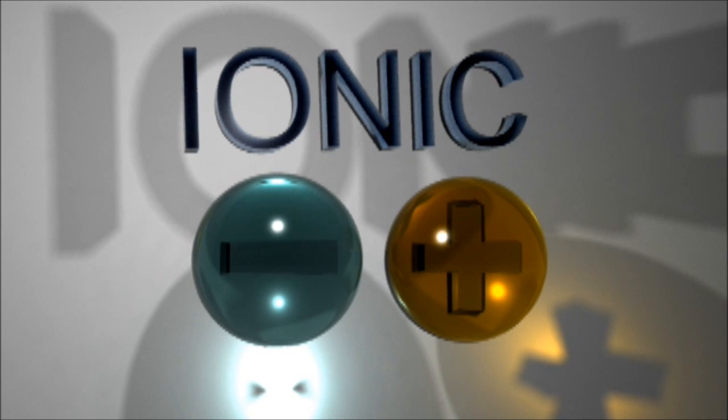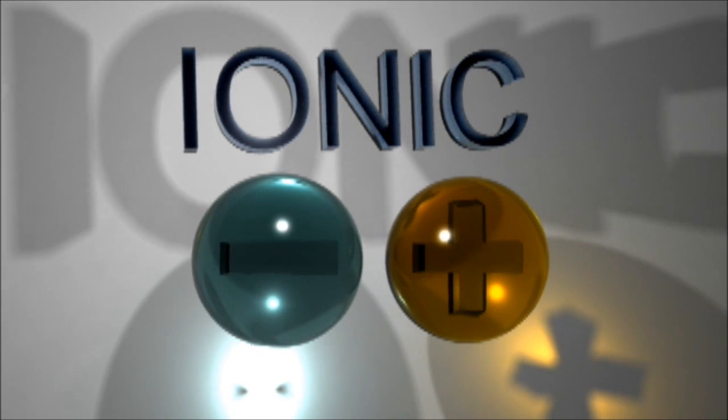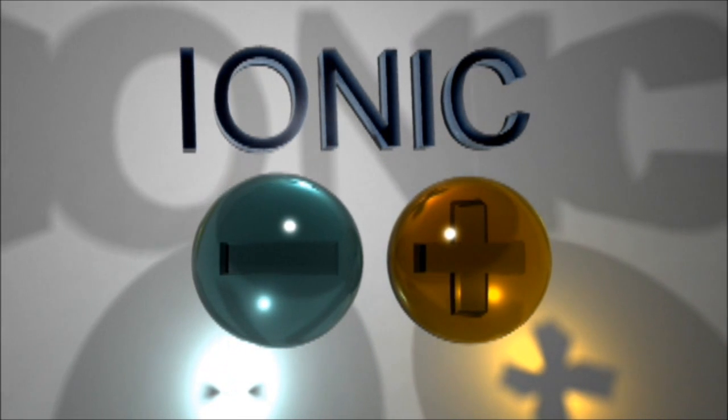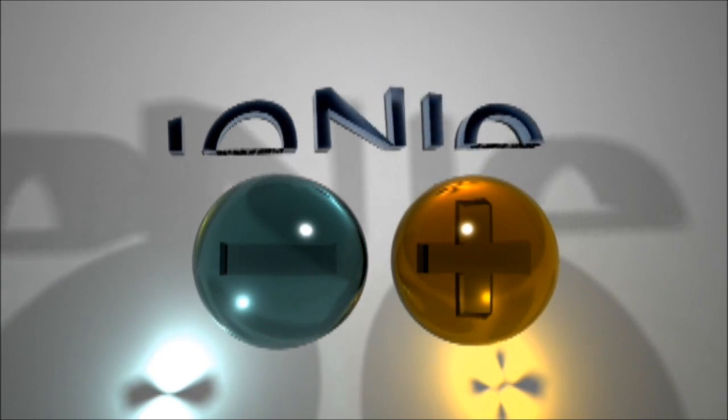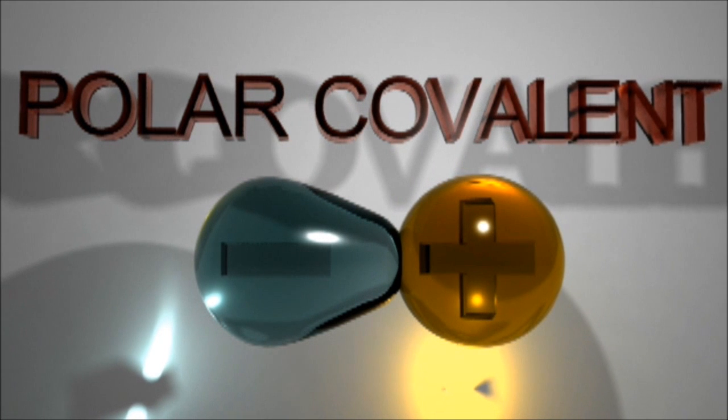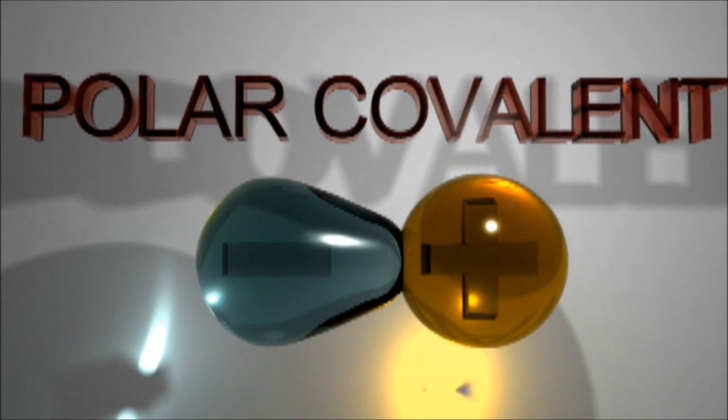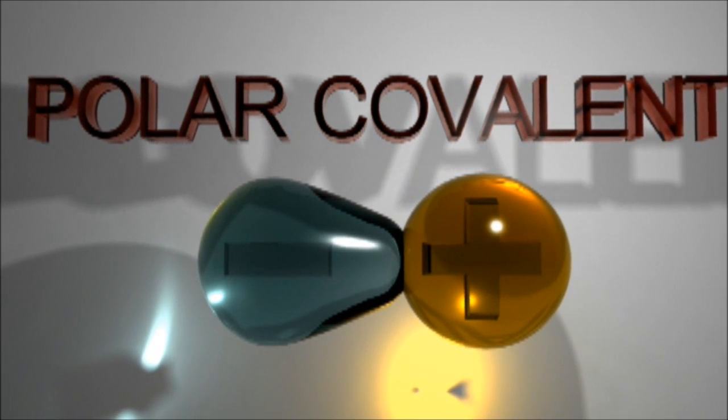Another way to think of it is a positive ion with a high charge density is more likely to pull the electrons from the negative ion over towards itself in this sort of pear shape, and then there'll be some overlap between the electrons in the orbitals for both ions and electronic overlap. Well, that's covalent, isn't it?